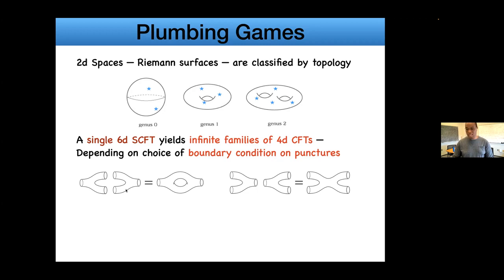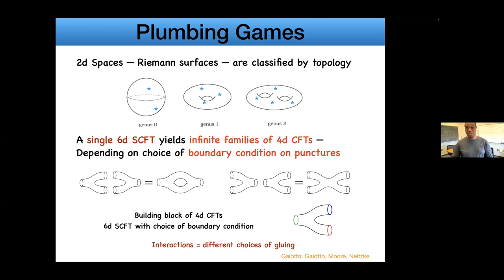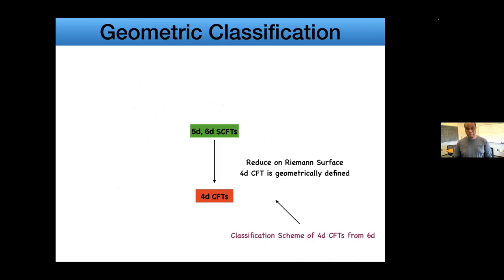There are building blocks from this perspective, akin to having free fields in Lagrangian theories. Each building block is labeled by what's usually called a pair of pants and some choice of boundary condition which associates some global symmetry to the theory. In the same sense, I might pick some hypermultiplet or chiral superfield and take a family of them in some representation of the group. Interactions correspond to picking different choices of gluing.